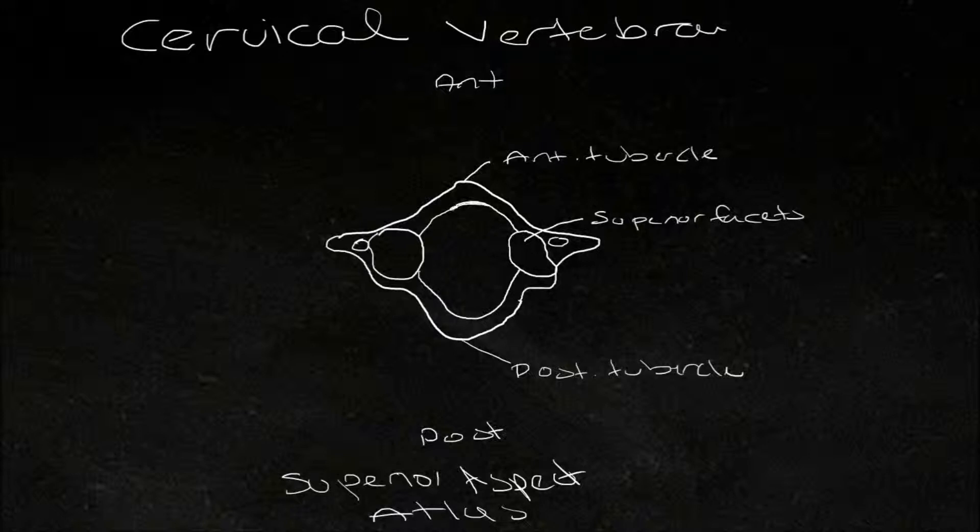Just on the inside here of the anterior arch, we have that facet for the dens. This is a projection on cervical vertebra two, or the axis.